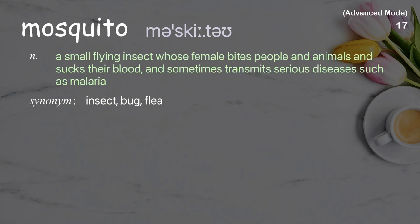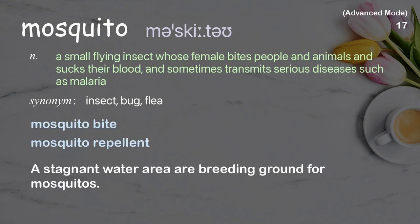Mosquito: a small flying insect whose female bites people and animals and sucks their blood, and sometimes transmits serious diseases such as malaria. Examples: mosquito bite, mosquito repellent. Stagnant water areas are a breeding ground for mosquitoes.